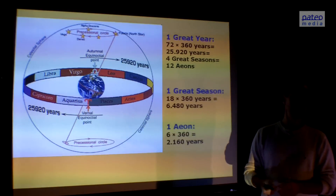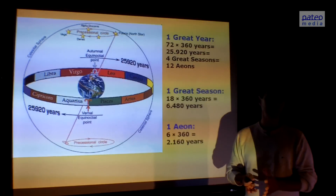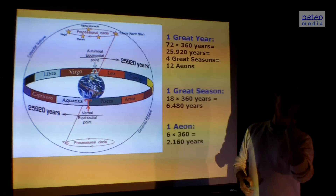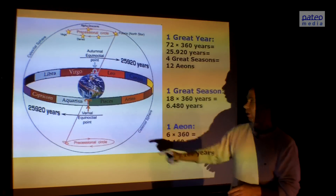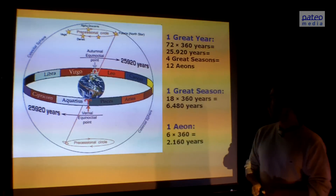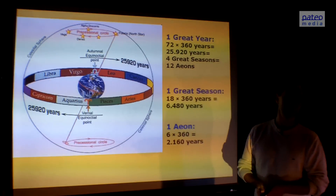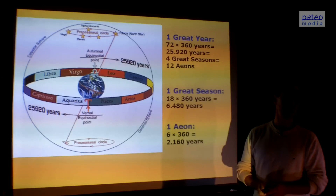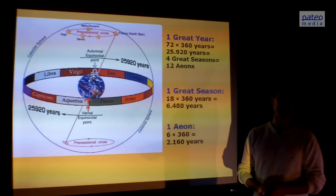Again, this full cycle has been divided into 12 different parts, and they have the same names as the monthly constellations, because the axis tilts and leans towards each of the constellations. At this moment we are about here — the Aeon of Aquarius is about to start. So we have a Great Year of 25,920 years, which is four great seasons. A great season is about 6,500 years long, and each Aeon is about 2,160 years long.